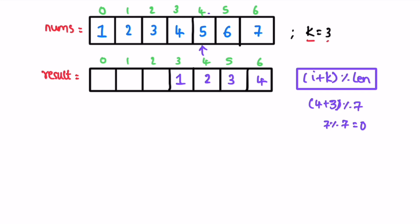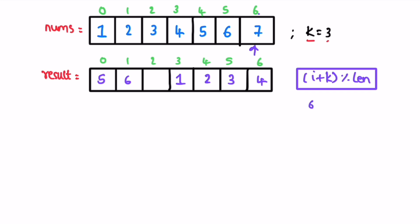Next iteration i=4: (4+3) mod 7 = 7 mod 7 = 0, so add it at index 0. Next, i=5: (5+3) mod 7 = 8 mod 7 = 1, so add it at index 1. Next, i=6: (6+3) mod 7 = 9 mod 7 = 2, so add it at index 2. When you go to the next iteration you reach the end of the array, and you get the final output array which is the expected output.